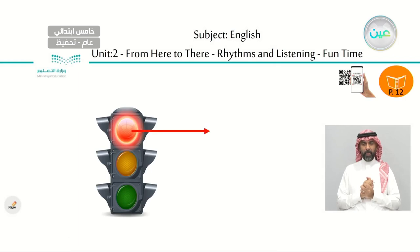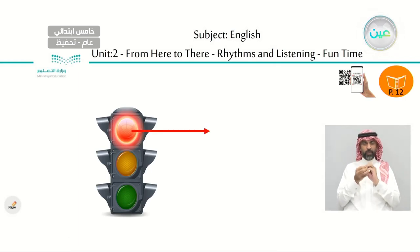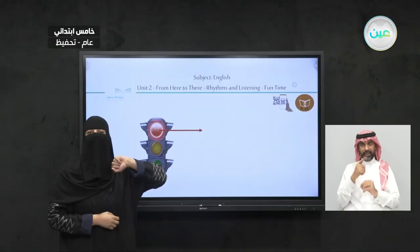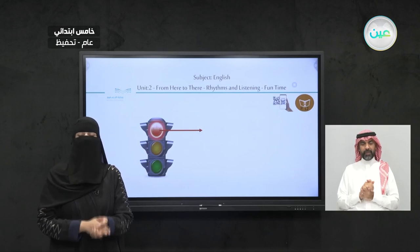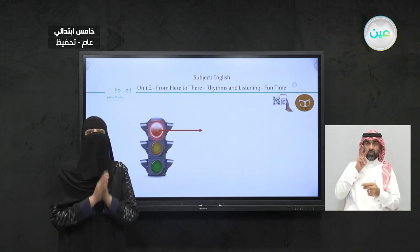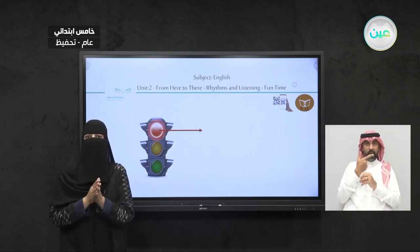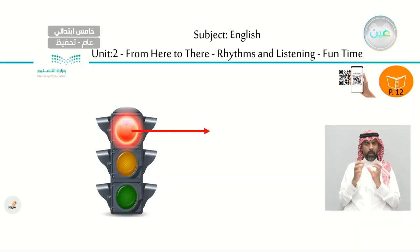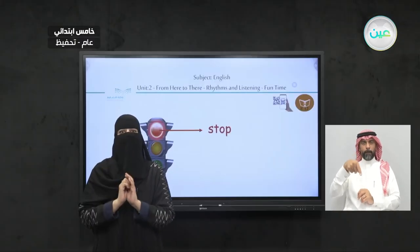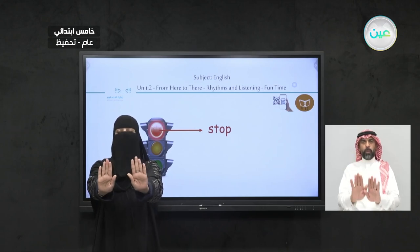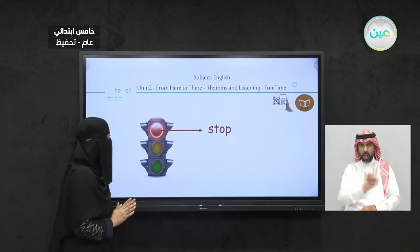Look at the first color here. Here we have a traffic light. Look at the first color — what color is it? Red. Excellent, it is red. So what does it mean when it is red? It means stop. It means stop. Don't go. Stop. So red means stop.